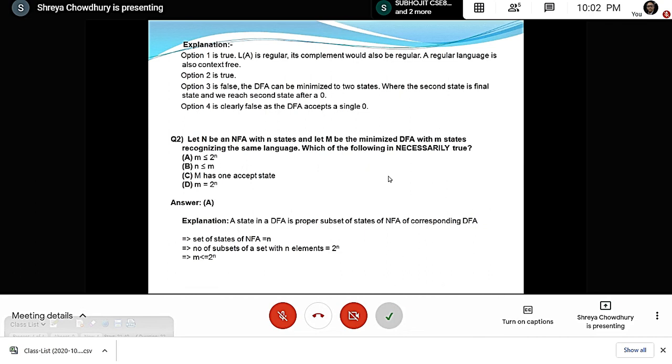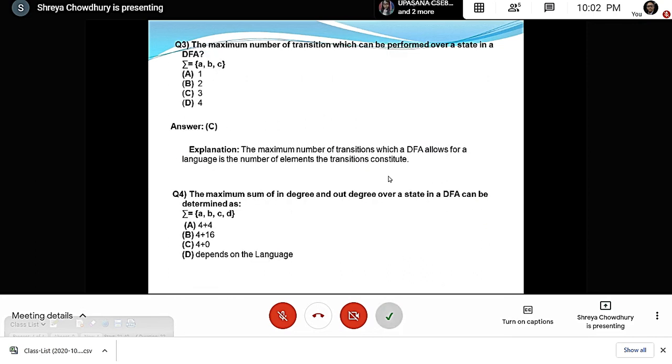Question 3: The maximum number of transitions which can be performed over a state in a DFA. The answer is 3, because the maximum number of transitions a DFA allows is the number of elements in the transition. Here we have 3 elements A, B, C, so the maximum is 3.